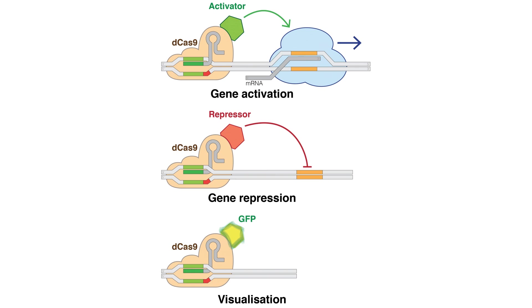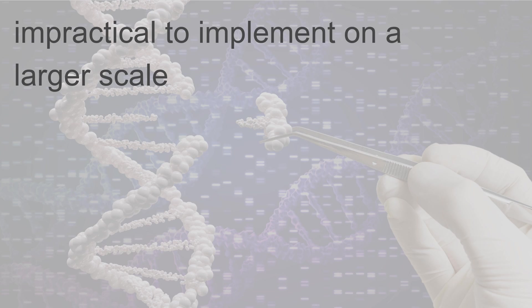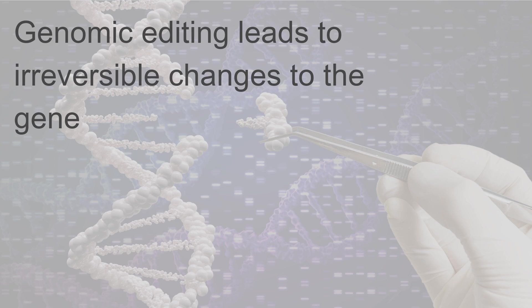A dead Cas9 protein coupled with epigenetic modifiers, which are used to repress certain genome sequences, can silence genes rather than cutting them altogether. While genomic editing in eukaryotic cells has been possible using various methods since the 1980s, the methods employed had proved to be inefficient and impractical to implement on a larger scale. Genomic editing leads to irreversible changes to the gene.